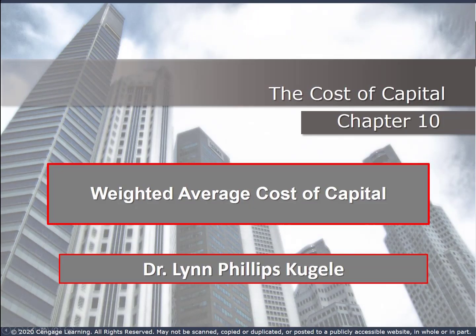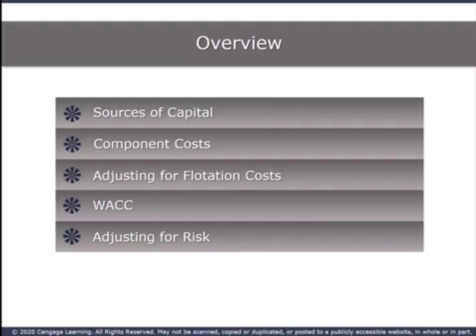With Chapter 10, we start to bring together all the topics we've covered so far as we head toward the end game in this course: Capital Budgeting Decision Making. We were very briefly introduced to the weighted average cost of capital in the last chapter. In Chapter 10, we cover how to find the weighted average cost of capital, what costs of capital are included, how to find the component cost, and how to adjust for risk.